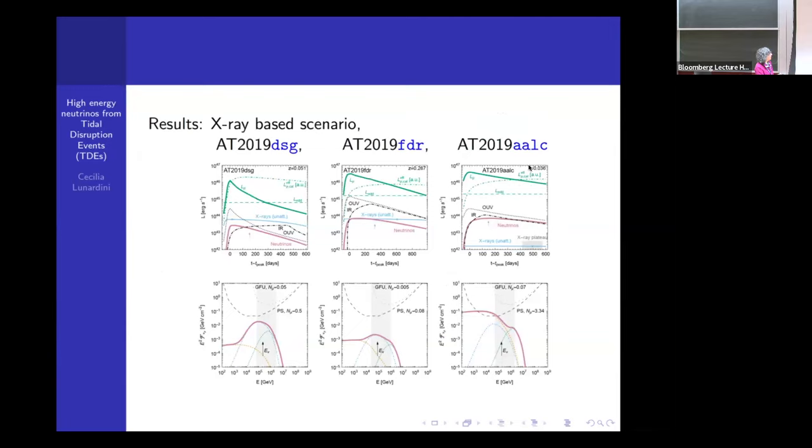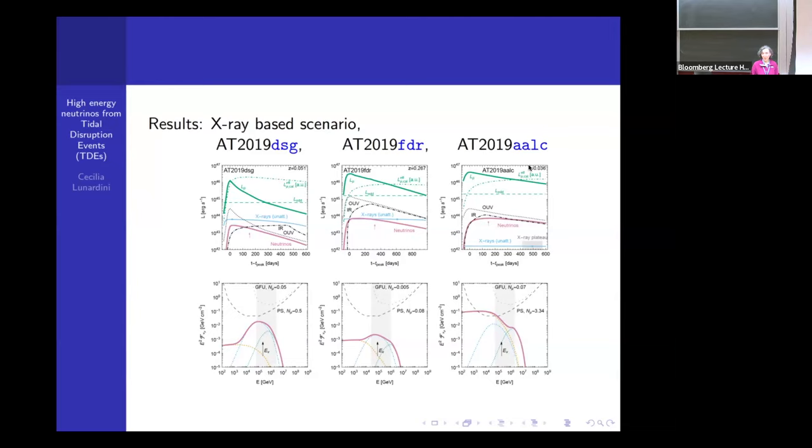Because time is going quickly, I'm going to go quickly on the next few slides. These are the results for the other two TDEs. So the one I showed in the previous slide is for AT 2019 FDR. You can see the results for the other two objects. There are some qualitative differences, quantitative differences, but qualitatively, the results are similar. And if you're wondering why for DSG, we have such a higher number of neutrinos predicted in the detector is because this one is the closest to us. So it's just a distance effect.